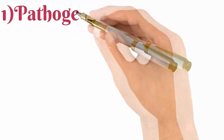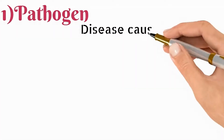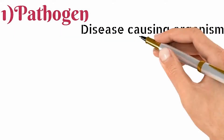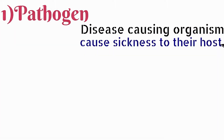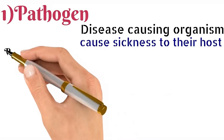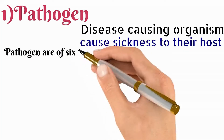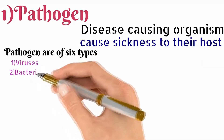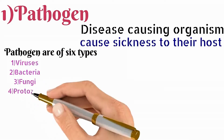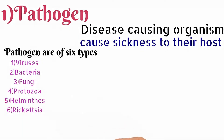First, we have the pathogen. Pathogens are disease-causing organisms or agents that cause sickness to the host in which they are living. Pathogens are mostly of six types: viruses, bacteria, fungi, protozoa, helminths, and rickettsia.